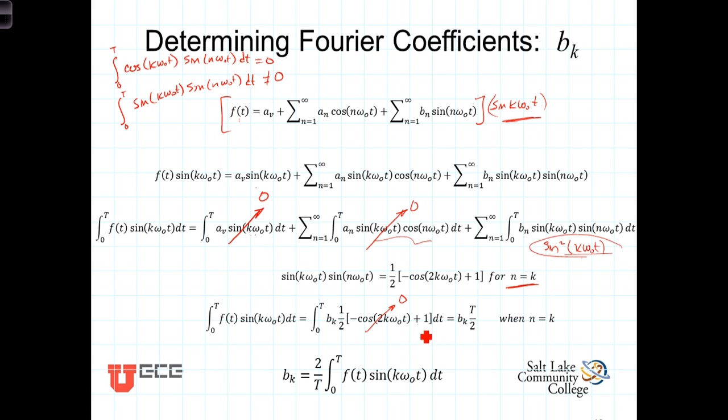This right-hand integral becomes b sub k t over 2. We solve for b sub k by multiplying both sides of this equation by 2 and dividing by t, and we end up with the formula for the b sub ks, which is 2 over t times the integral of our function multiplied by the sine of k omega-0 t dt.